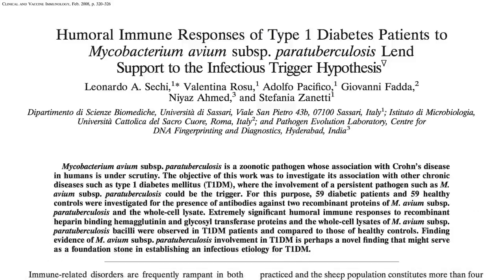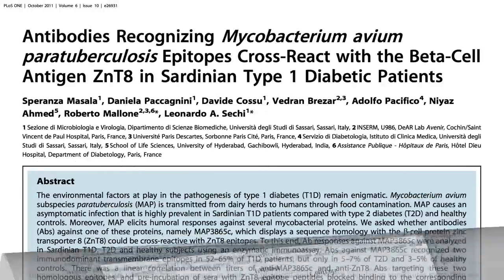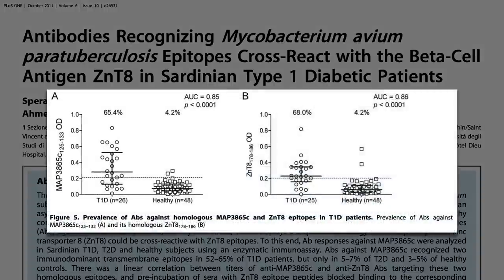For this infectious trigger idea to be sound, there would have to be an immune response mounted to the bug — and indeed there is an extremely significant antibody response against paratuberculosis bacteria in type 1 diabetics. But do the antibodies attacking the bug cross-react with our own insulin-producing cells to generate that autoimmune reaction? Apparently so. Antibodies recognizing the molecular signatures of mycobacterium avium paratuberculosis cross-react with the molecular signatures present on our insulin-producing beta cells in our pancreas.